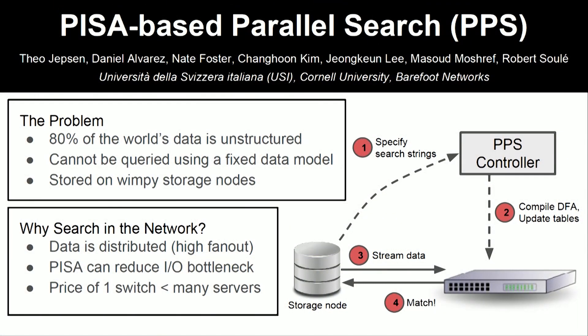I'm Theo Jepsen from USI in Switzerland. Did you know that 80% of business data is stored as unstructured data — like text or images? Most very common computer tasks involve searching through this text, and it can't be done using things like SQL. Now with disaggregated networks, the data is not stored where the compute is performed anymore. So when we want to do search, we have to transfer the data across the network to compute nodes. But why don't we just search the data in the network?